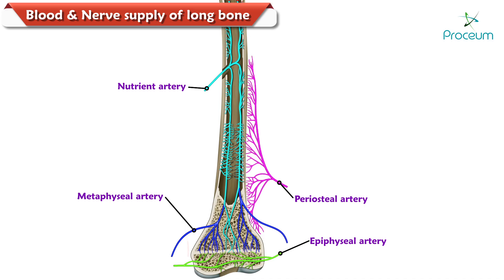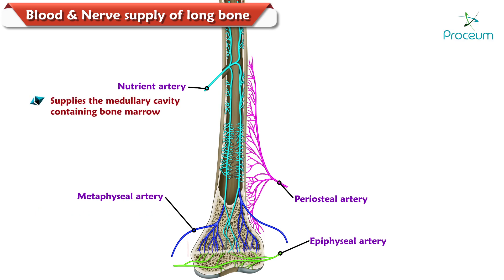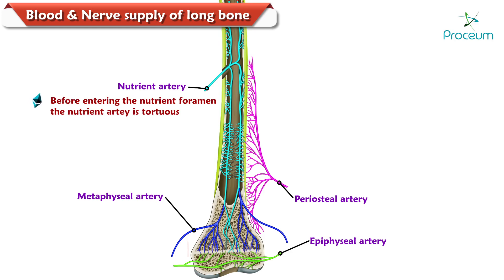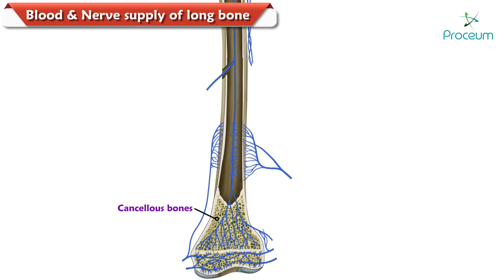Thus, the metaphysis is the most vascular zone of the long bone. The nutrient artery supplies the medullary cavity containing bone marrow and the inner two-thirds of the outer shell of compact bone of the diaphysis and metaphysis. Before entering the nutrient foramen, the nutrient artery is tortuous so that it is not affected during movements. The veins are numerous and cancellous.